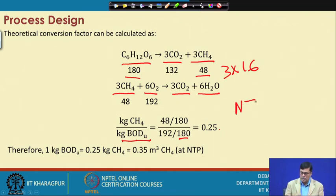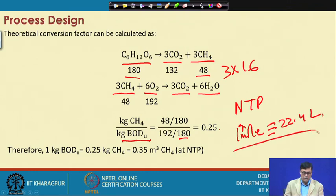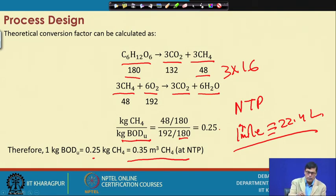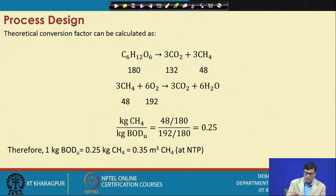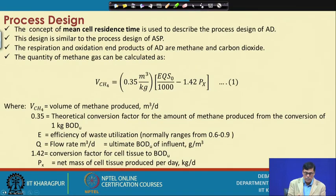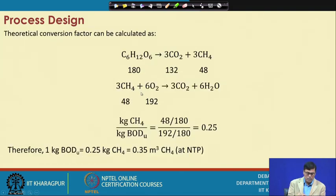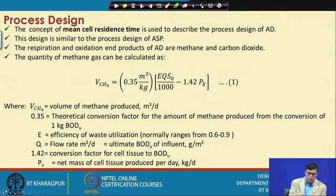At NTP, 1 gram-mole of gas equals 22.4 liters. Using this, we find the volume of methane produced equals 0.35 cubic meters of methane per kg of BOD removed. So from this equation, knowing the amount of BOD removed, you can easily find out how much methane volume is produced using the factor 0.35, and multiply by 0.25 to get kg of methane produced per kg of BOD removed.